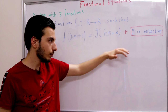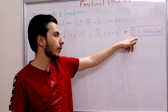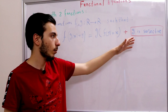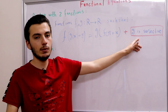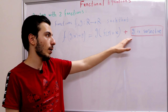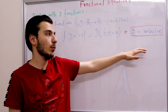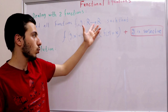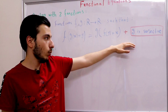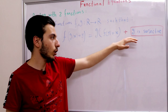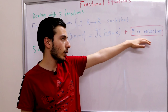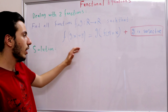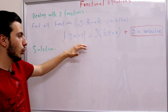This problem has appeared in lots of olympiads, but each time the condition is changed — for example, sometimes g is bijective, or the domain is from ℤ to ℤ. We're solving the version where g is surjective and f and g are from ℝ to ℝ. Let's take a look at our functional equation.